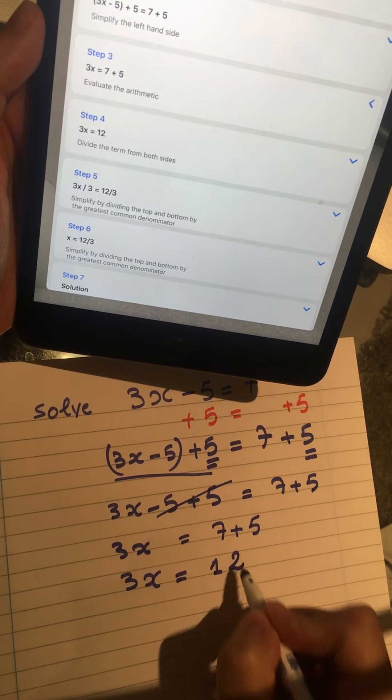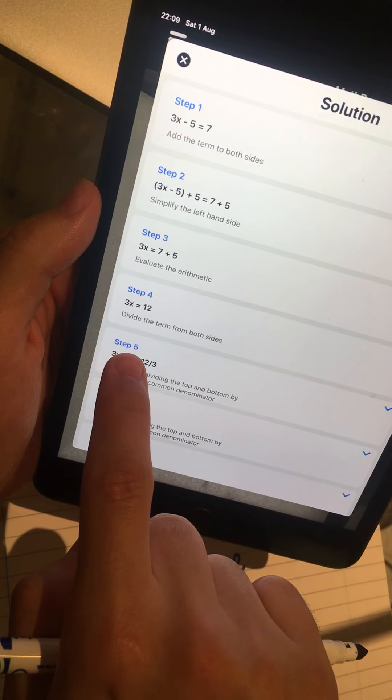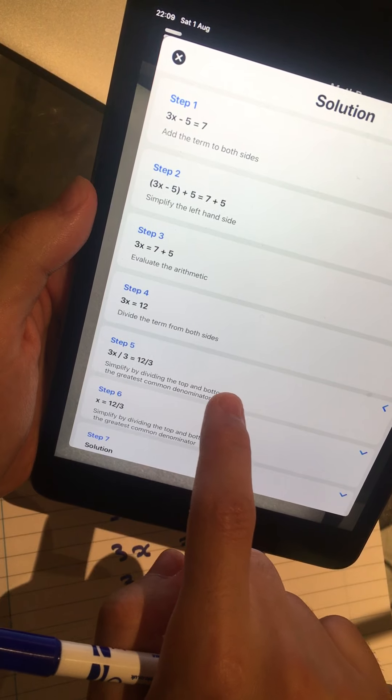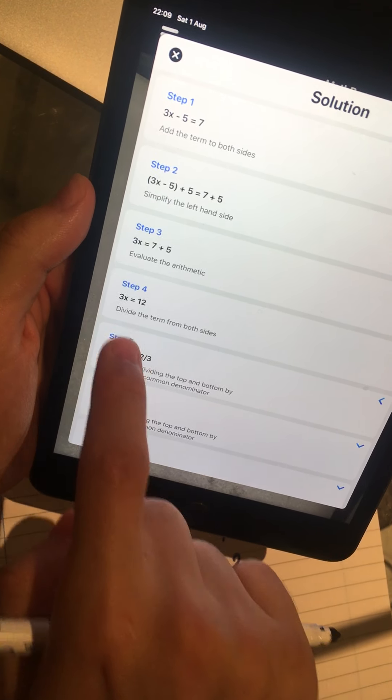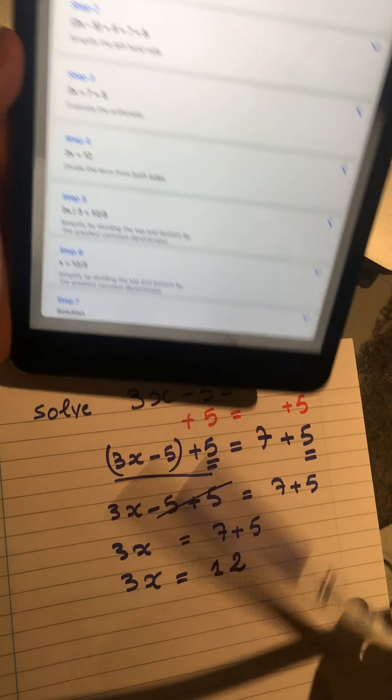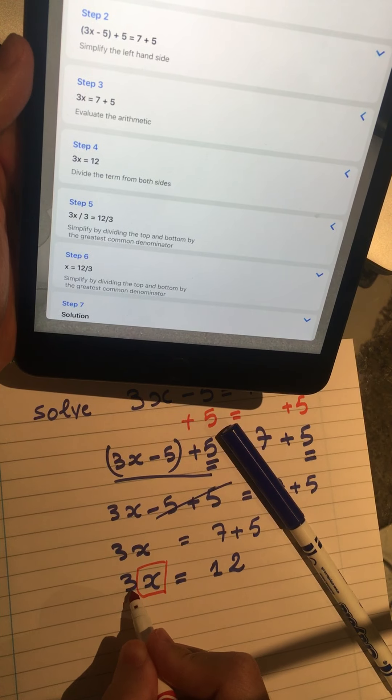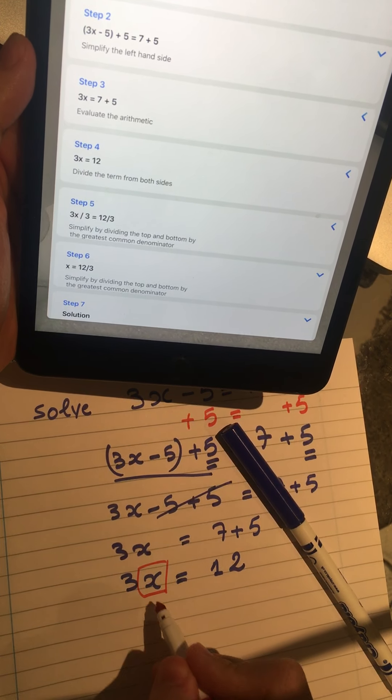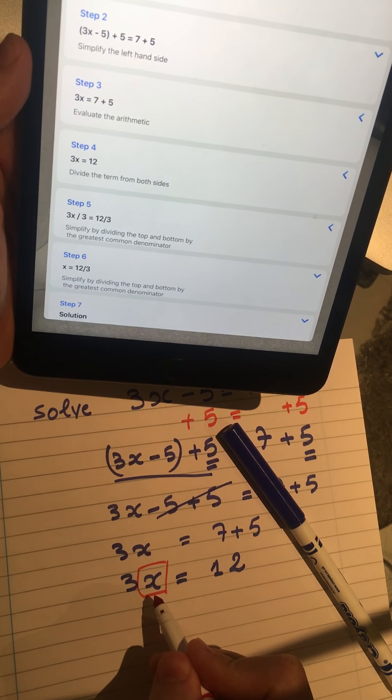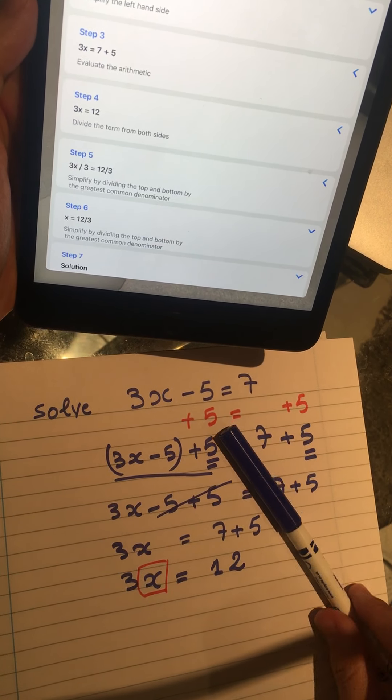Now we have to divide the terms from both sides with the same number, which is the 3. So our goal is to achieve what is x. X is multiplied by 3, so if we divide everything by 3, we can isolate x so it stays alone. We can solve the equation for x. Now we have to divide everything by 3.